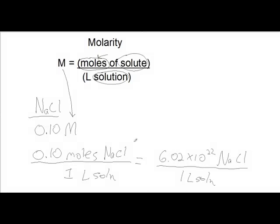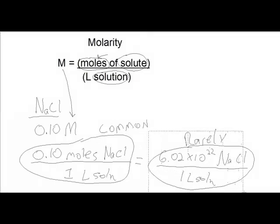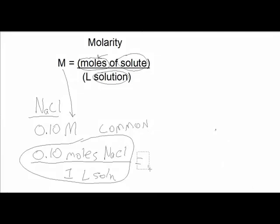That's what this really means. You will probably rarely, if not at all, use this form — you're rarely going to look at it this way. I just wanted to point out to you what .1 moles of NaCl per liter really means. The more common definition of molarity says: in one liter of solution, there's going to be .1 moles of NaCl floating around. That's the definition — molarity is a definition of the concentration.